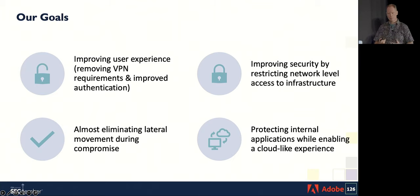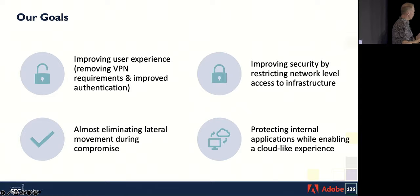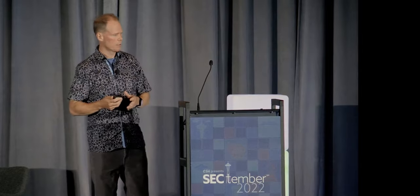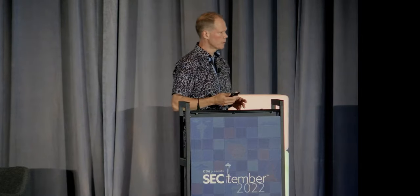An added benefit was eliminating lateral movement. If you're not in a VPN tunnel and don't have access to the entire network, it's very hard to exploit a neighboring service because you only have access to what you need — specific services or particular protocols. Protecting internal applications was another benefit: by restricting access to just what's required, you reduce the number of ways threats can attack your service. Access has to be sanitized, follow auditable standards, and be limited to what's allowed for that particular service.